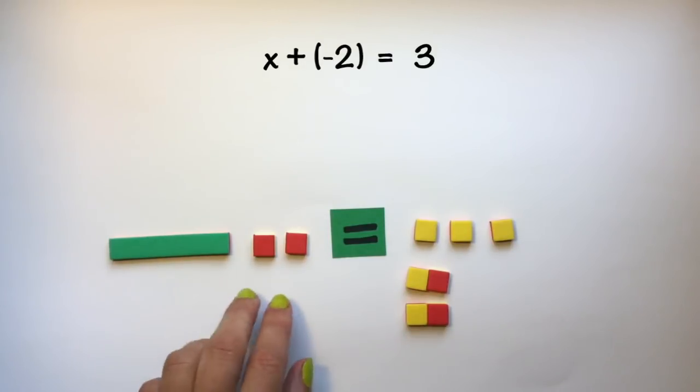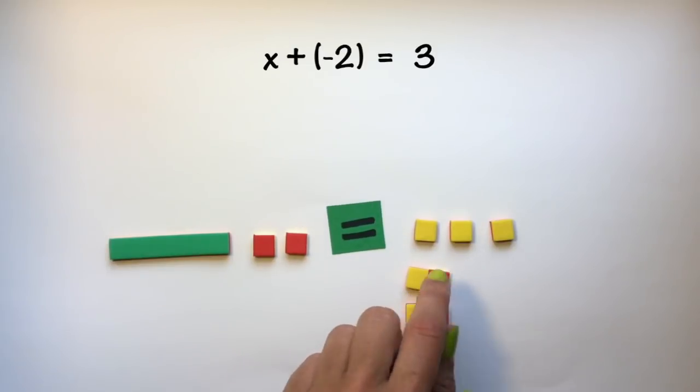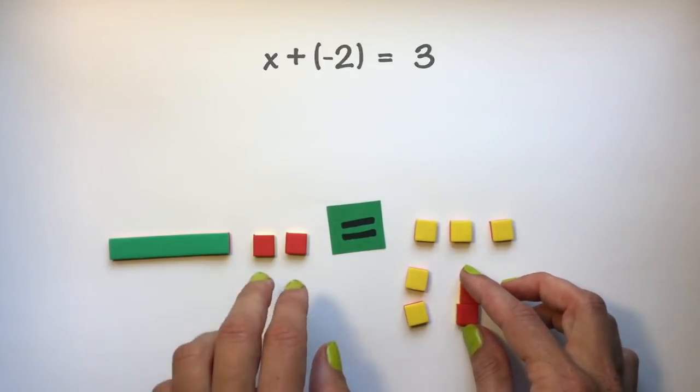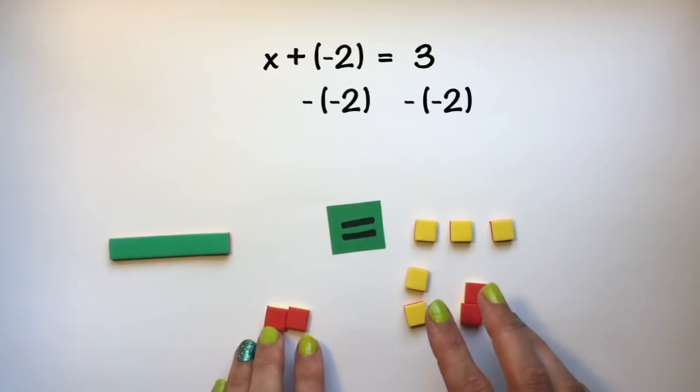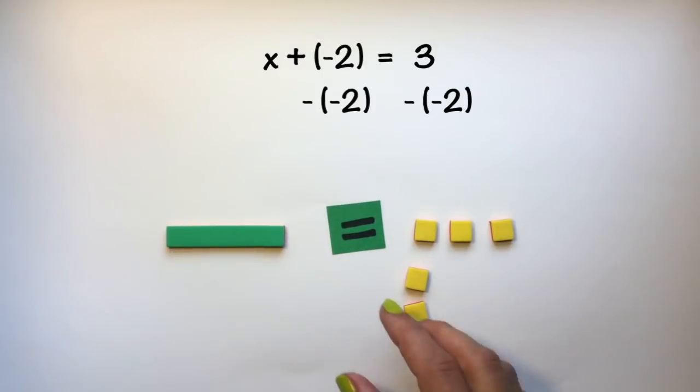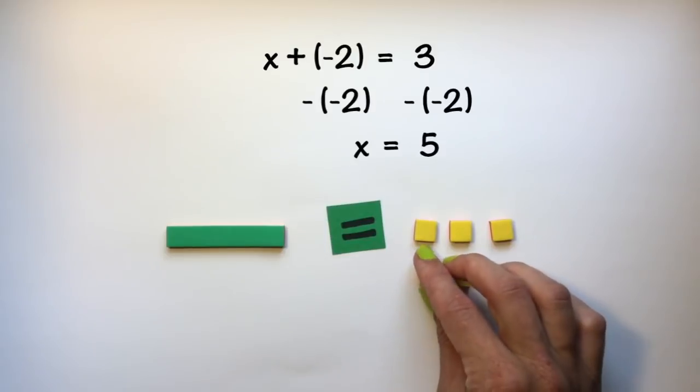So I still have x - 2 = 3 even though I've added two zero pairs, but by putting those two zero pairs there, I'm now able to take away negative 2 from both sides in order to isolate x and see that x = 5.